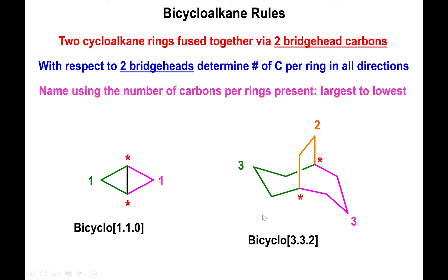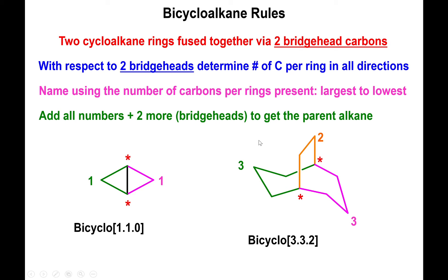For the second molecule, you have three carbons to the left, three carbons to the right, and two carbons on top, so you input the numbers as 3.3.2, always in decreasing order. Then you add up these numbers: for the first, one plus one is two, and since you also have two bridge heads you add two more, giving four total carbons — so this is a butane structure. For the second, three plus three plus two is eight, plus two bridge heads is ten carbons, making it a decane structure. The overall names are bicyclo[1.1.0]butane and bicyclo[3.3.2]decane.